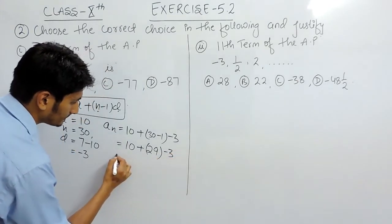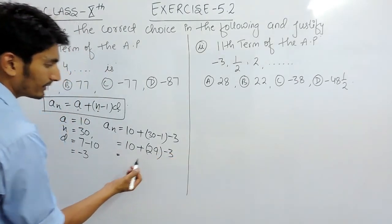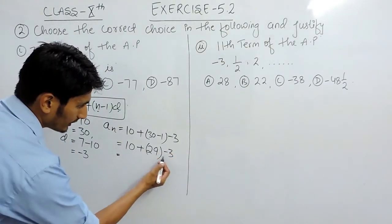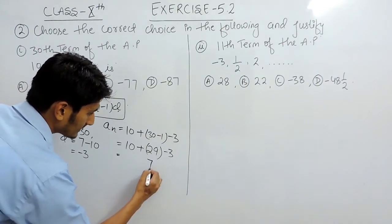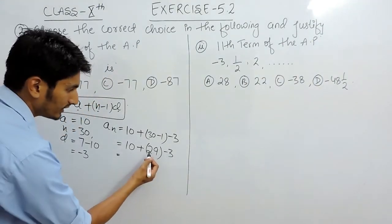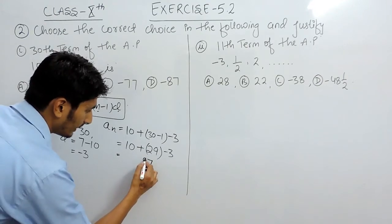Minus 3. So 3 multiplied by 29 is: 3 into 9 is 27, carry 2, 3 times 2 is 6, and 2 is 8—87.